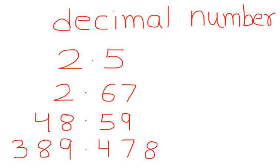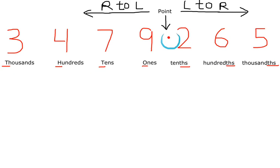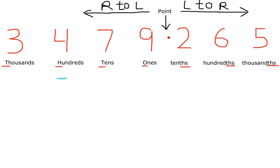Now let's take a decimal number and try to understand the places and place values. Before the point, we move right to left and the places are ones, tens, hundreds, and thousands. We write the first letter capital: O capital, T capital, H capital, and T capital.